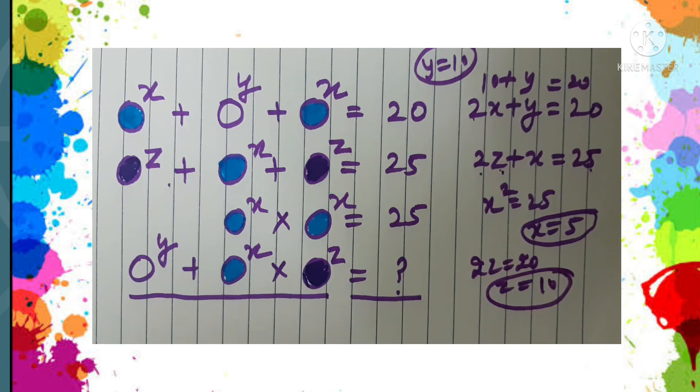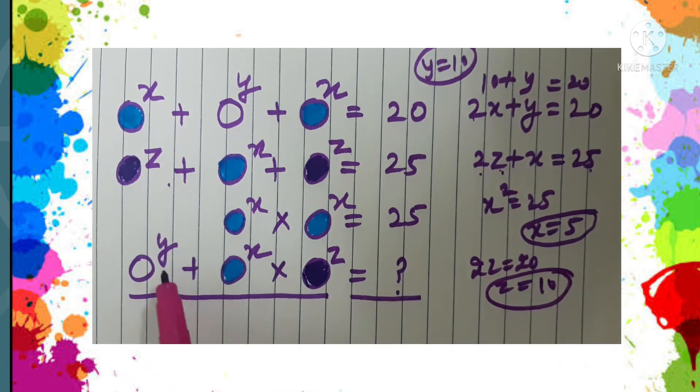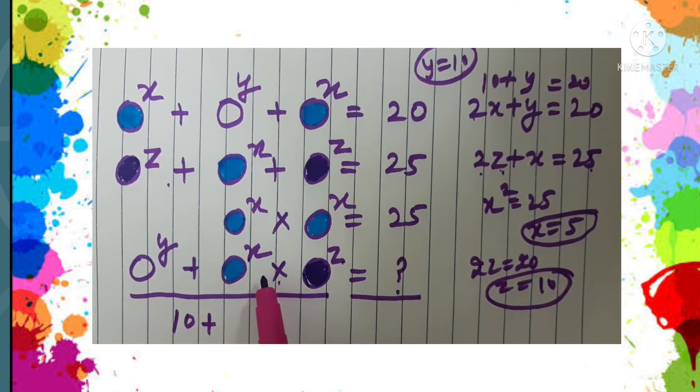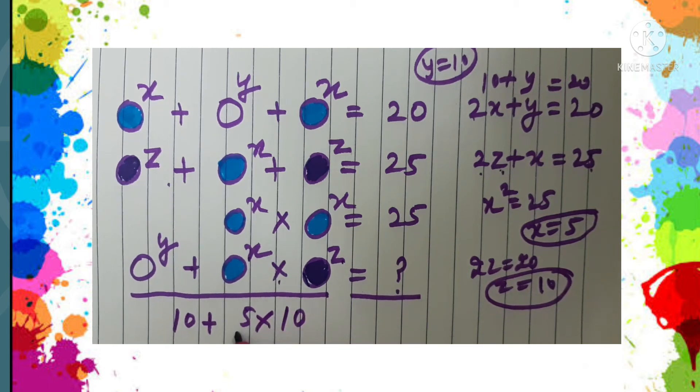Now we have X, Y, and Z. We can easily calculate the expression which is at the end: Y plus X into Z. What is Y? Y is 10. 10 plus X. X is how much? 5 into Z. Z is 10.